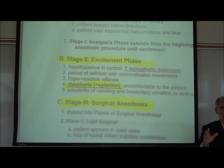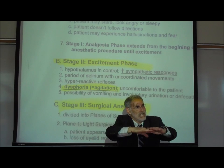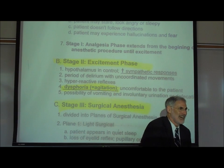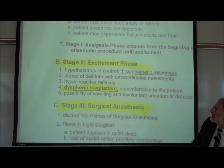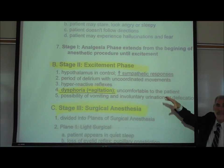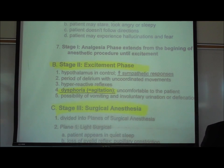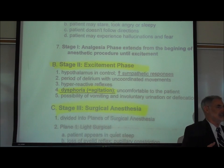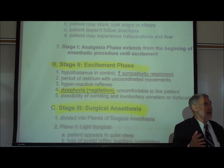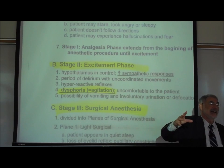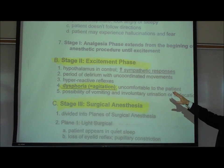Stage two is a paradoxical stage. As you go deeper below the analgesic stage, the patient actually becomes hyper even though they're going deeper into anesthesia. There is increased sympathetic response — their heart rate may speed up and they may exhibit dysphoria or agitation. When administering nitrous oxide, if you see pupillary dilation, speeding up of the heart rate, or increased agitation, it's not that you haven't given enough — you've given too much and gone too deep into the excitement phase.